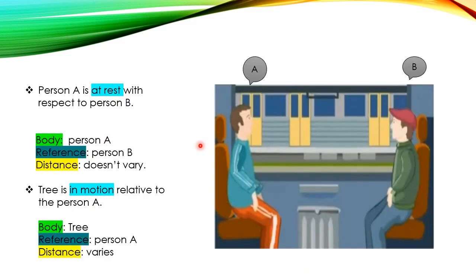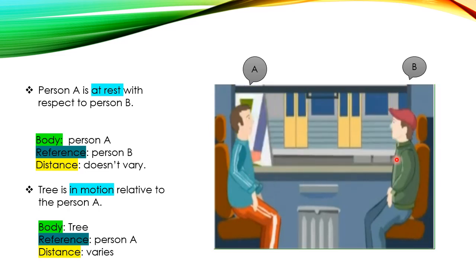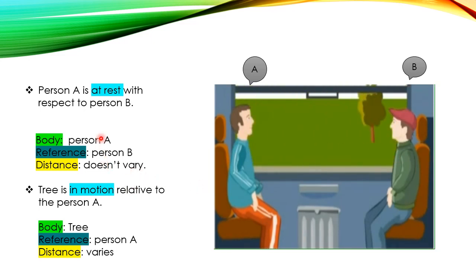Let us take this small example. In this video, we have two persons, person A and person B, sitting in a moving train. Person A is at rest with respect to person B. To determine this, we specify the body — person A — and the reference — person B, which is the word after 'with respect to'. Since both are sitting in the train, the distance between person A and person B does not vary. Thus, person A is at rest with respect to person B.